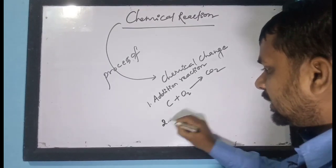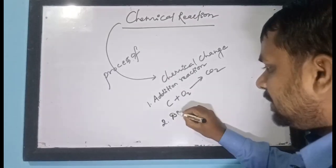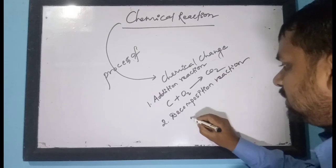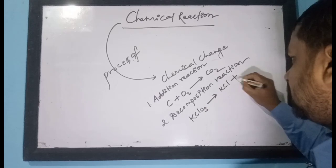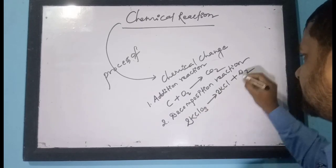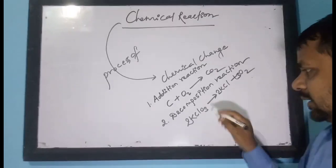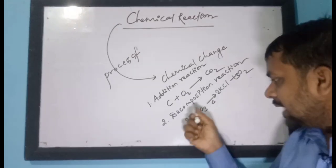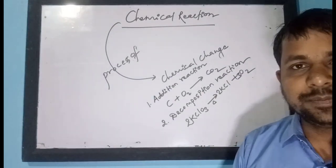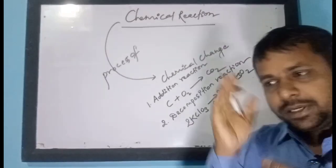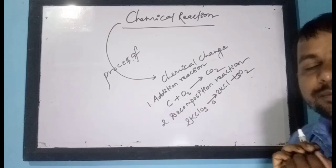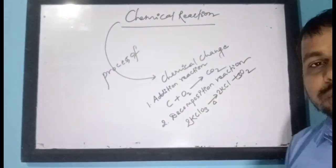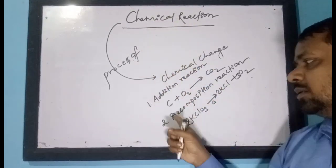Similarly, a chemical reaction can also take place by decomposition, and that reaction is called decomposition reaction. For example, when potassium chlorate (KClO₃) is heated, it changes into potassium chloride (KCl) and oxygen. Here the larger compound is breaking down into simpler compounds. Such a reaction in which a larger molecule decomposes into simpler molecules is called a decomposition reaction.